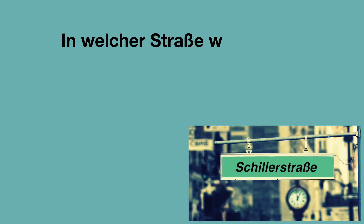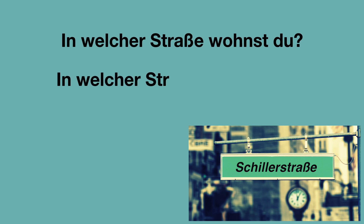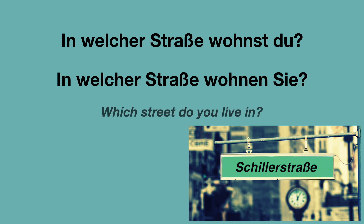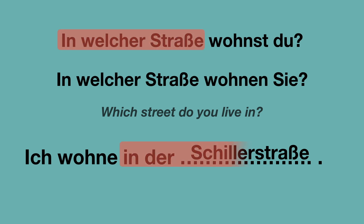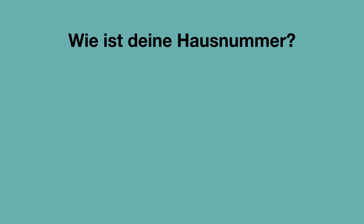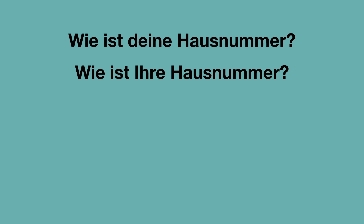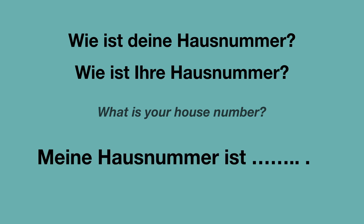In welcher Straße wohnst du? In der Sie-Form: In welcher Straße wohnen Sie? Both of them mean: Which street do you live in? Ich wohne in der — zum Beispiel: Ich wohne in der Schillerstraße. Frage: In welcher Straße? Antwort: In der — in the name of the street — hier: in der Schillerstraße. Wie ist deine Hausnummer? Oder: Wie ist Ihre Hausnummer? Meine Hausnummer ist — zum Beispiel: Meine Hausnummer ist 101.